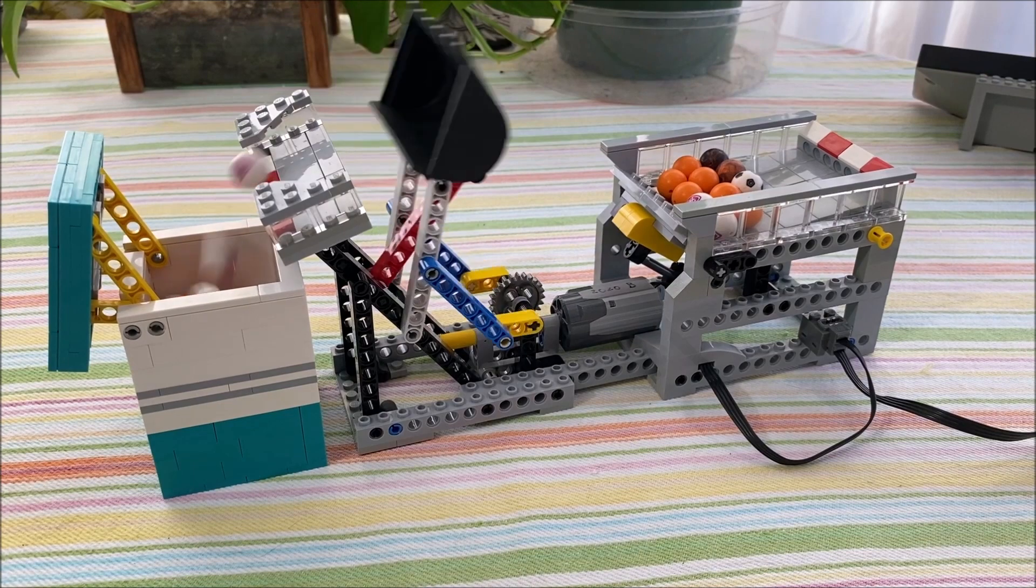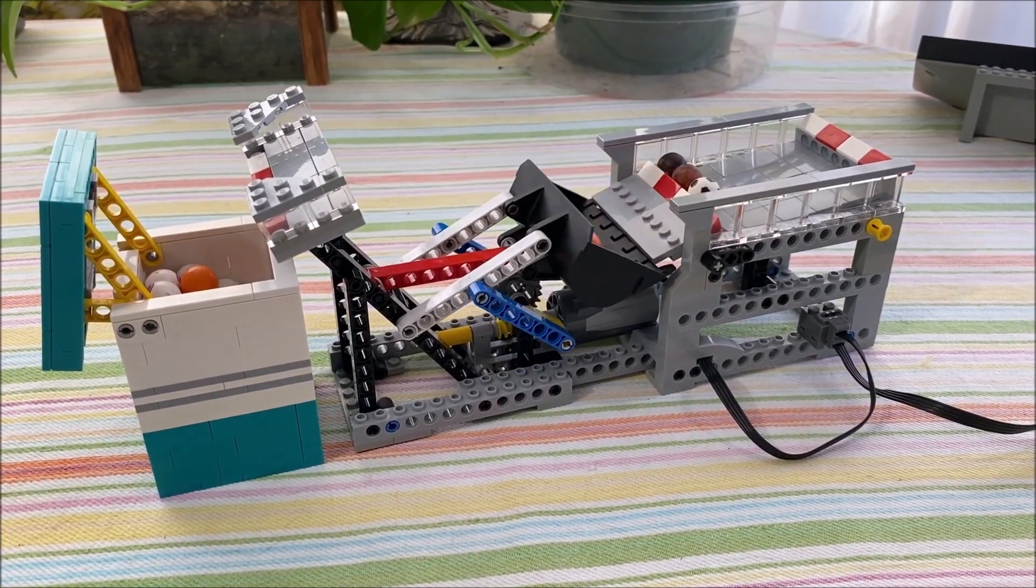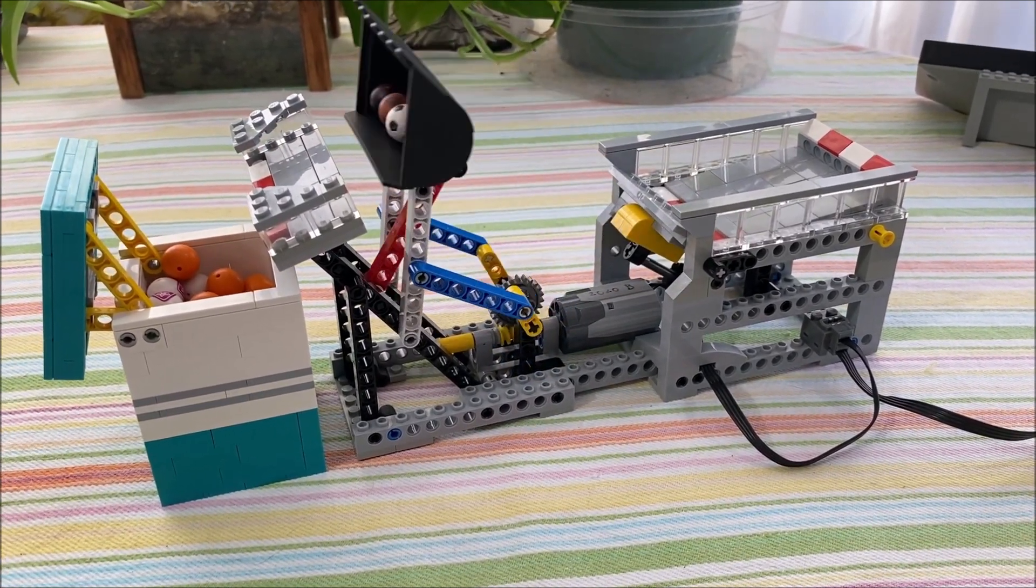This is somewhat similar to a module that Philo built in the early 2000s in that it's also using a four-bar linkage and the dozer bucket, but the exact shape of this linkage is a little different.